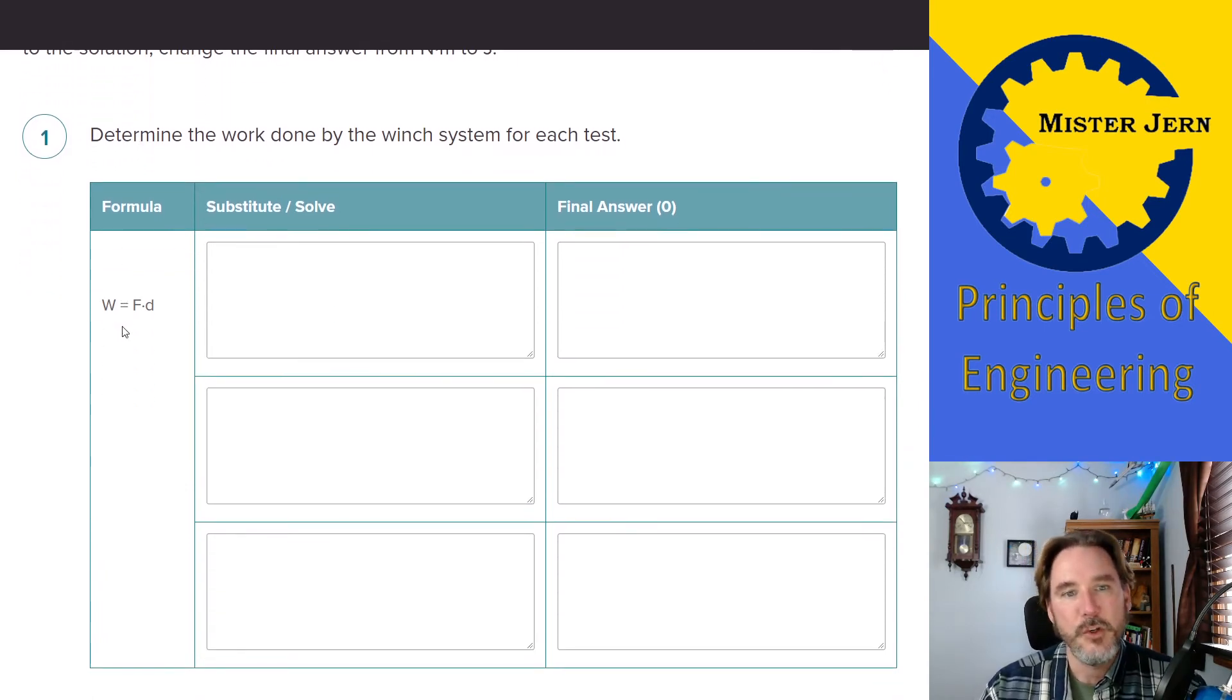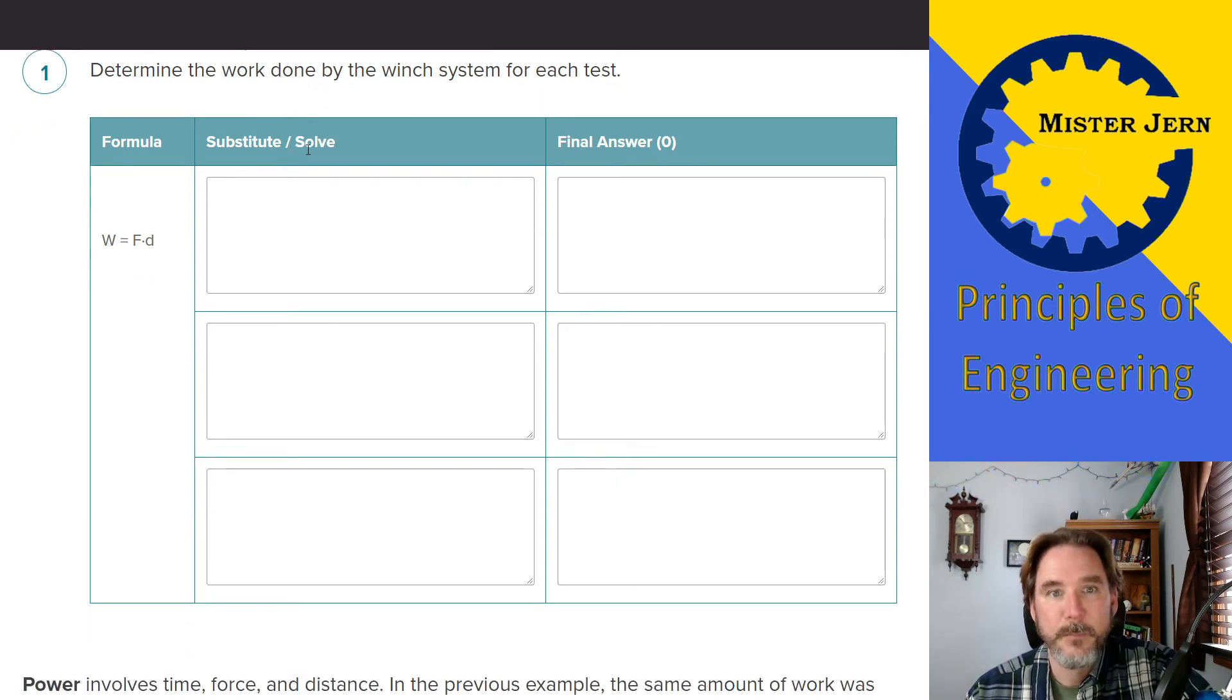Step one, you should write this down in your engineering notebook. You're going to determine the work done by the winch system for each test. So here's the formula you're going to use. Work is force times distance.